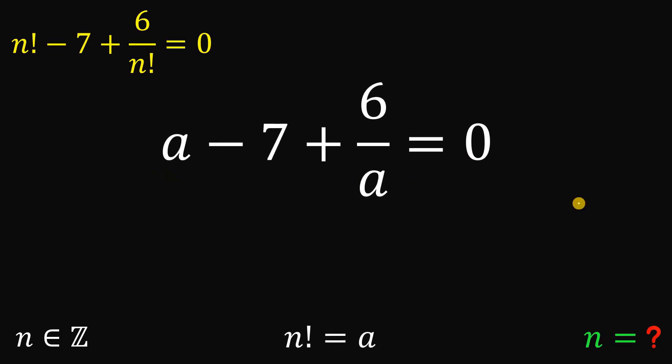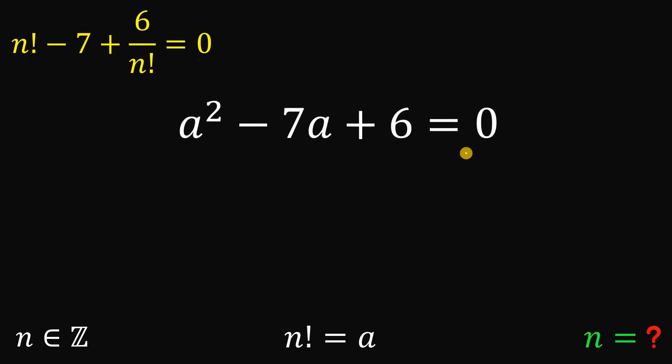Now multiply all of this term by a. So we get a squared minus 7a plus 6 equals 0. And let's focus on this because this is a quadratic equation in terms of a.